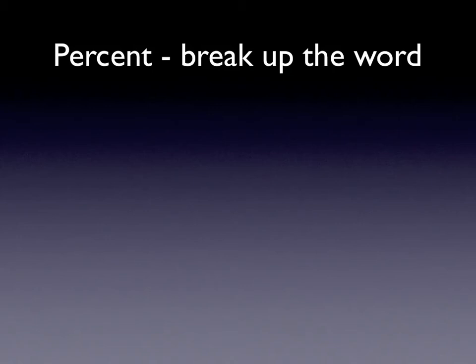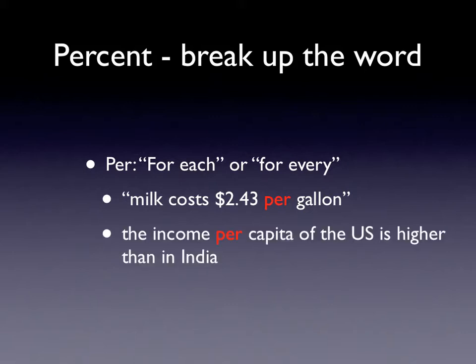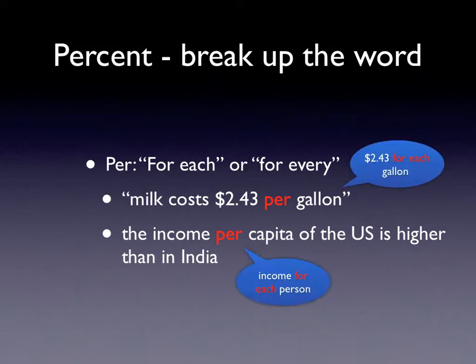These notes go with section 3.7 in the Algebra text and cover the subject of percents. First, let's look at this from a vocabulary standpoint. Let's take the word percent and break it up into its parts. The 'per' part means for each or for every. For example, if we say milk costs $2.43 per gallon, that means how many dollars it costs for each one gallon. If we say the income per capita of the U.S. is higher than in India, that means the income for each person — capita means per head or per person. So 'per' means for each or for every.